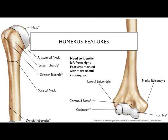Moving down to about halfway along the lateral and slightly posterior surface of the bone, you feel a bumpy set of projections called the deltoid tuberosity. The deltoid muscle attaches there — that's why it's named that. Bumpy surfaces give muscles a large area to grip and hold position.